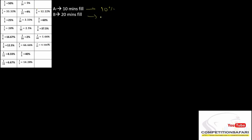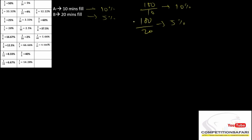So when I see 10 minutes here, I can simply write 10%. For those who haven't seen our videos of time and work, they might be wondering where these values are coming from. I'm just giving you a glimpse: 100 divided by 10 minutes gives 10%, and 100 divided by 20 gives 5%. This we have clearly explained in our first video of time and work. If you go through our video, you will have a complete and crystal clear understanding of how we use this ratio table.